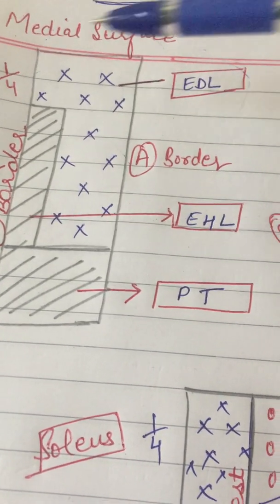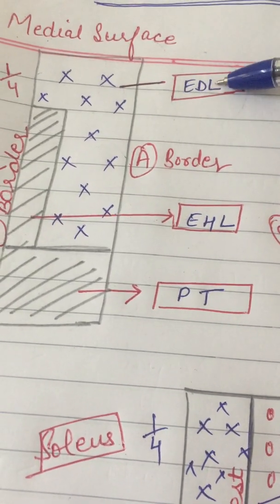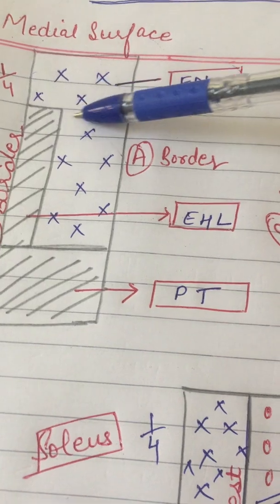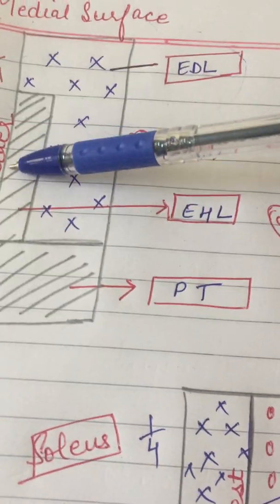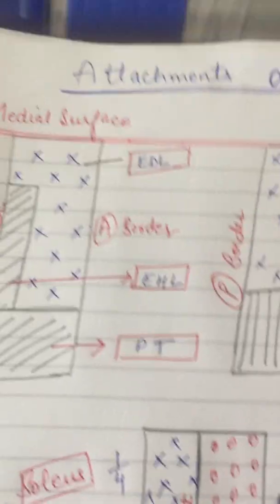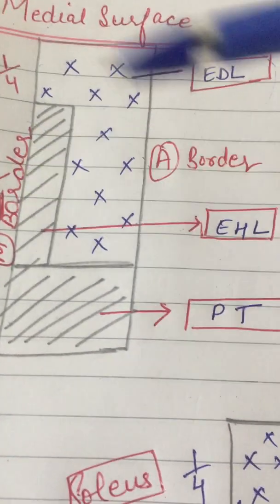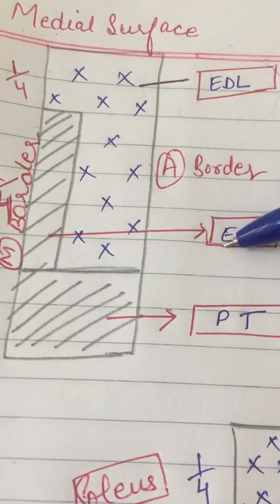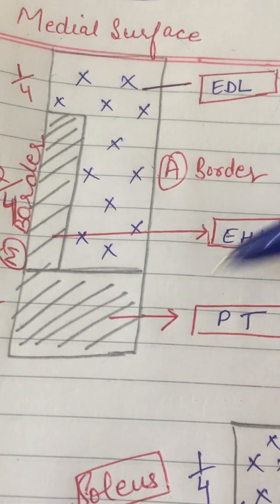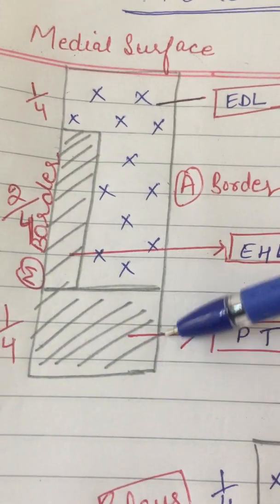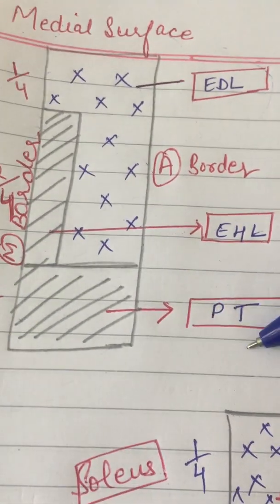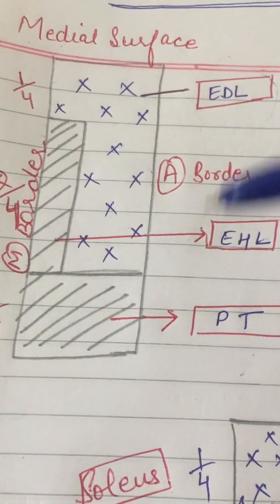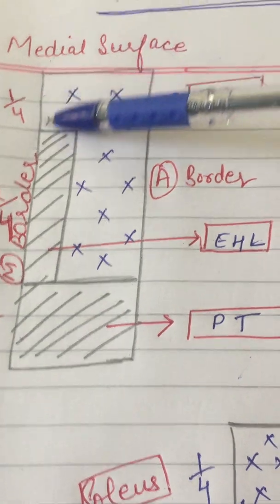So from the upper one-fourth and anterior part of the middle two-fourths arises extensor digitorum longus, and from the remaining posterior part of the middle two-fourths arises extensor hallucis longus. The remaining part is the lower one-fourth, from where peroneus tertius arises. So this is the medial surface.